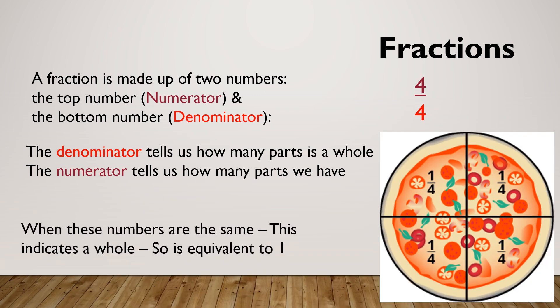One thing to remember is when our top number and our bottom number are both the same, it's equivalent to one. So it's saying a whole. If I've got four quarters of a pizza, I've got a pizza cut into four bits and I have all four of those. So when our numerator and our denominator are the same, it's equivalent to one.